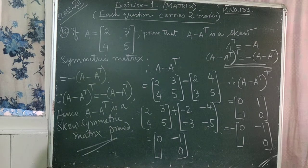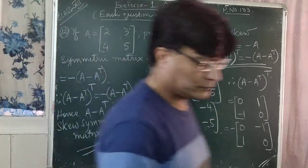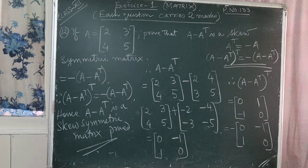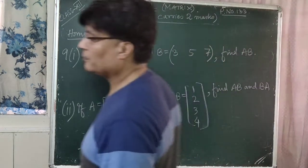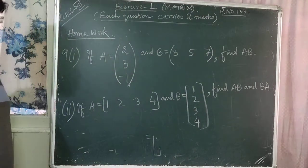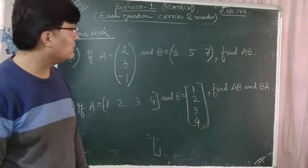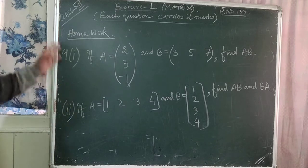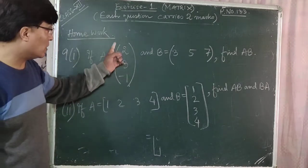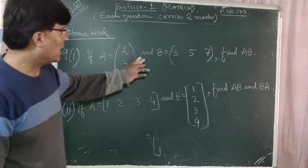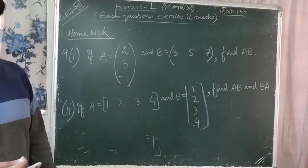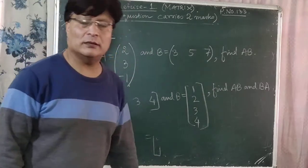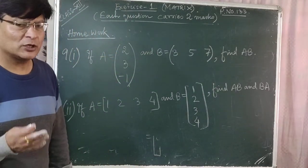Now I'll give you the homework from the same exercise, page 133, each question carries 2 marks. Question 9(1): if A is the column matrix [2; 3; -1] and B is the row matrix [3, 5, 7], find AB if it is possible. For AB to be possible, number of columns of A must equal number of rows of B.